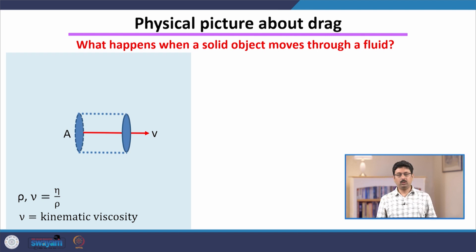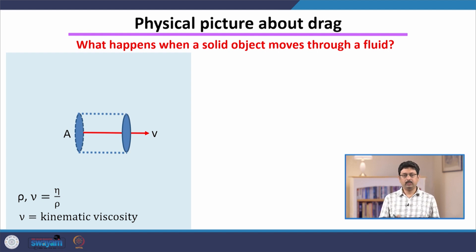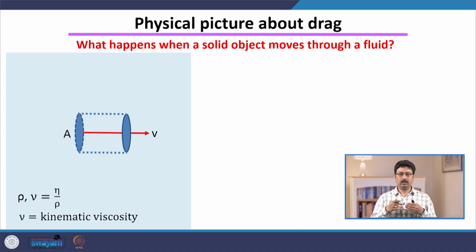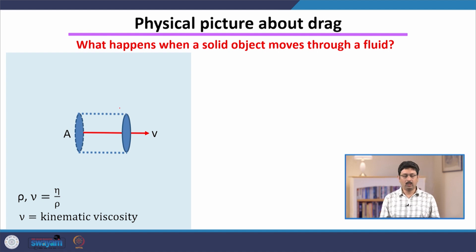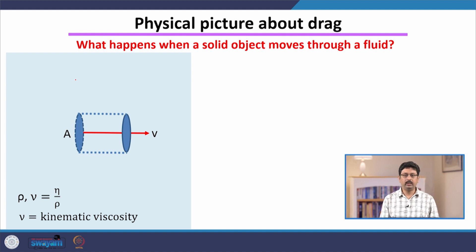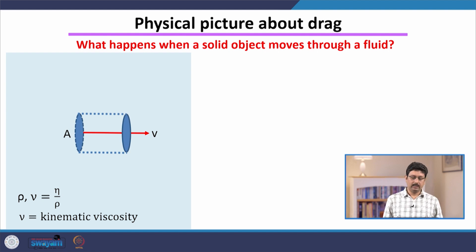Rather than just writing down and memorizing the formula, let me emphasize the physical picture of what is going on with the drag force — what happens when a solid object moves through a fluid. Here is a schematic: let us say this disk represents the cross-section A of an object moving through a fluid with velocity V. Let us imagine that initially the fluid is at rest. There are two things that happen.